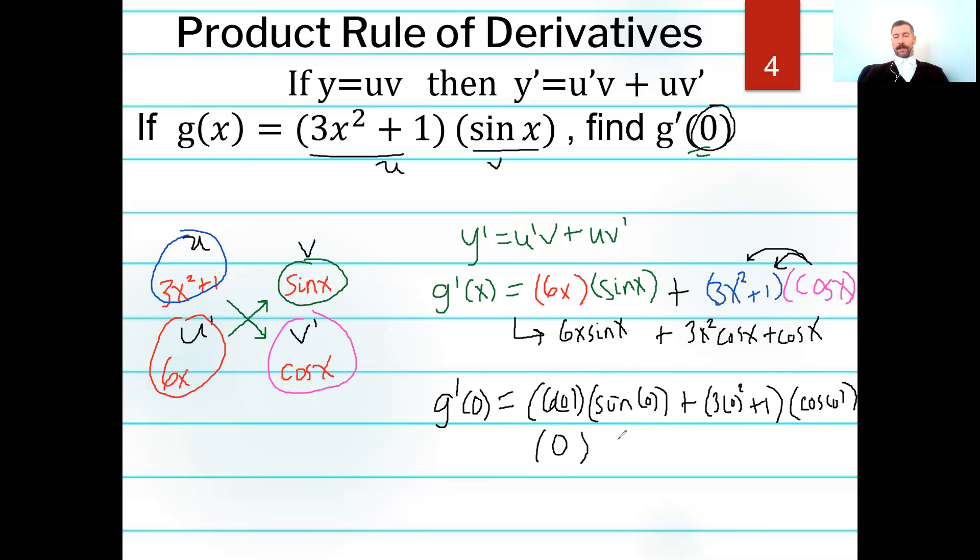Sine of zero, I can use my calculator, but I know that the sine function starts at zero. That's also zero. Plus zero squared is zero times three is zero, but that plus one is going to make that one. And cosine of zero is also one. So we have zero times zero plus one times one. It's amazing how nice our answer is here. The slope of our function, this original function, at zero is actually just equal to one.